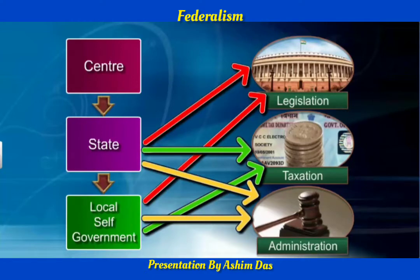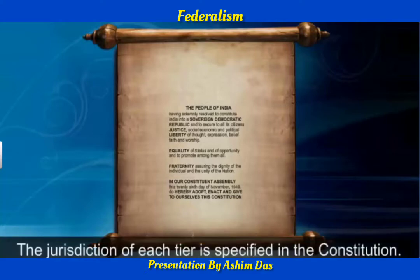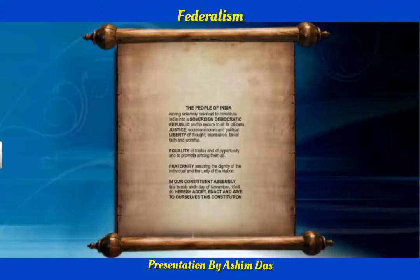Jurisdiction is the legal authority and can be defined in terms of geographical area. Federalism provides constitutional guarantees for the existence and authority of each tier of government. The basic provisions of the constitution cannot be unilaterally changed by one tier of government.